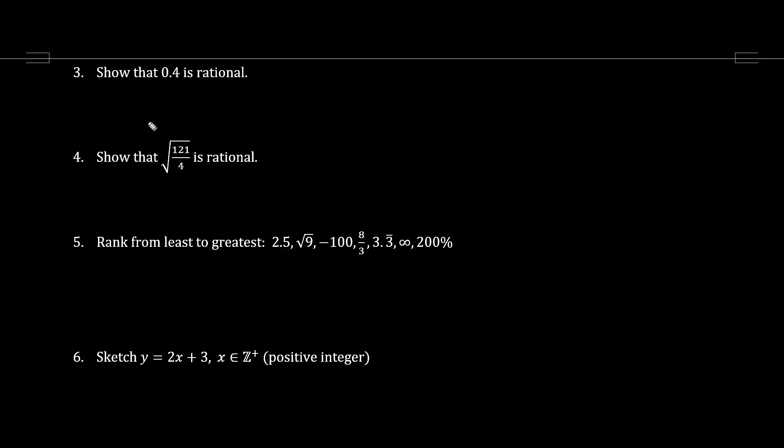Let's show that 0.4 is rational. 0.4 over 1 can be written as 4 over 10, multiplying top and bottom by 10. So right away we don't even have to reduce this. This here is rational.